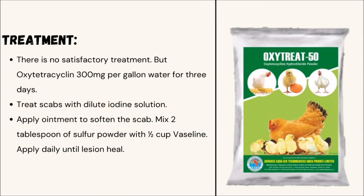Treatment of Fowl Pox: There is no satisfactory treatment, but oxytetracycline 300mg per gallon of water for 3 days may be administered. Treat scabs with dilute iodine solution. Apply ointment to soften the scab by mixing 2 tablespoons of sulfur powder with half a cup of vaseline. Apply daily until the lesion heals.